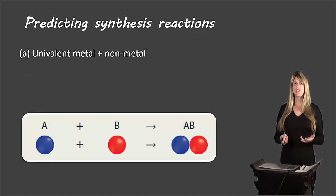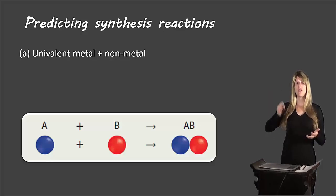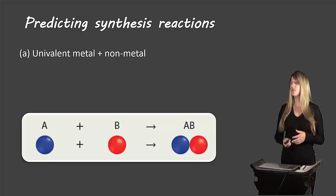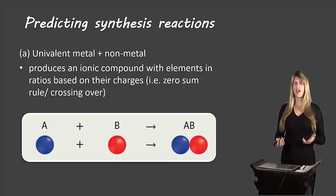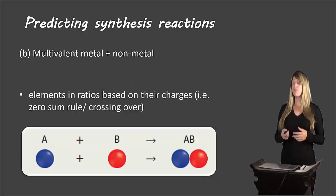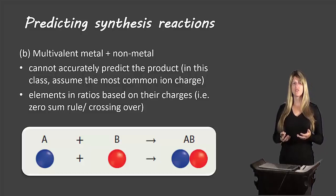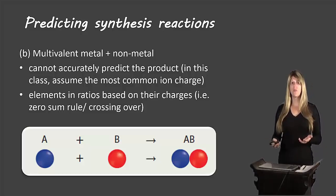If you're dealing with a univalent metal — anything on the periodic table where we determine the ionic charge based on its position — these produce ionic compounds and we determine the formula using either crossing over or the zero sum rule. If we have a multivalent metal and a non-metal, we don't always know for sure which compound will form because there are several possibilities.